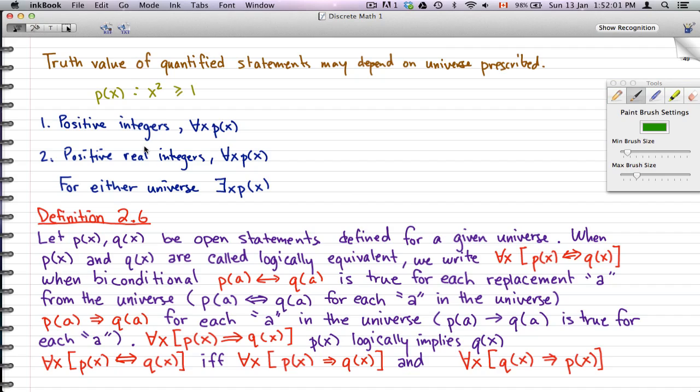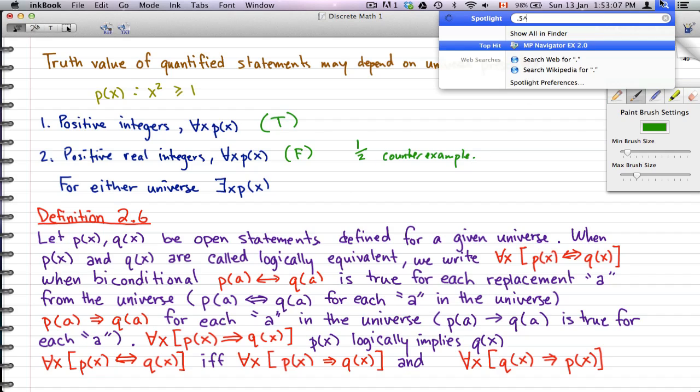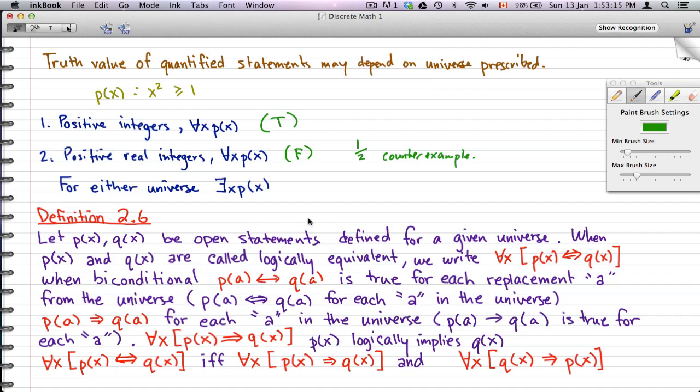For example, Px statement for Px is x squared is greater than or equal to 1. For positive integers, exists x Px. Positive real integers, for all x Px. For either universe, exists x Px. What we want to do here is we want to find the truth or the validity of these statements. Now positive integers exists x Px, well there is, this is always true because if we just put like 1, for example, then the square of 1 is 1 and that'll make the statement true. So this is a true statement.